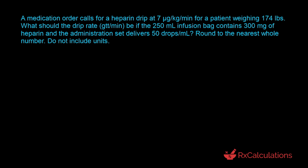In this question, the goal is to calculate the drip rate in drops per minute. We've been given the volume of the infusion — 250 milliliters — the drop factor of 50 drops per milliliter, the amount of drug which is 300 milligrams in 250 milliliters, the patient's weight of 174 pounds, and the normalized mass rate of 7 micrograms per kilogram per minute, meaning the patient receives 7 micrograms of Heparin per kilogram per minute.